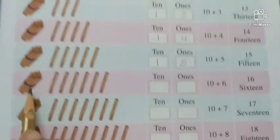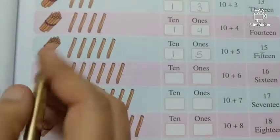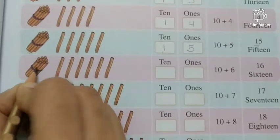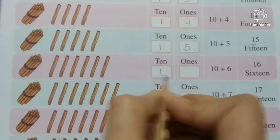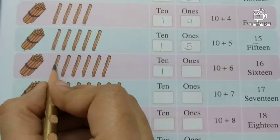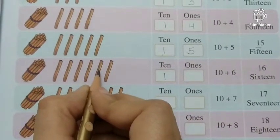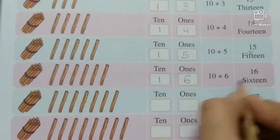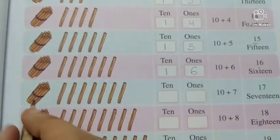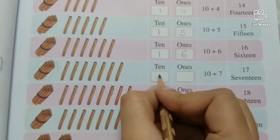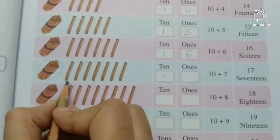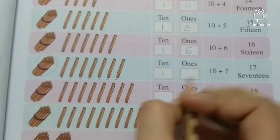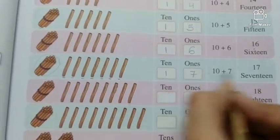Next, you have to do this work. Okay? Next, 1 tenth and how many ones? Count with me. 1, 2, 3, 4, 5 and 6. 6 ones. 1, 6, 16. Next, 1 tenth and one's. 1, 2, 3, 4, 5, 6 and 7. So, 1, 7, 17.